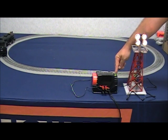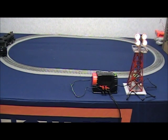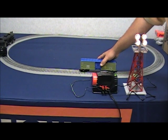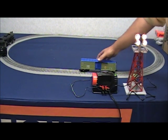Another feature of the CW80 is the circuit protection. I'm going to go ahead and take this boxcar and intentionally derail it on the track to create a short circuit.